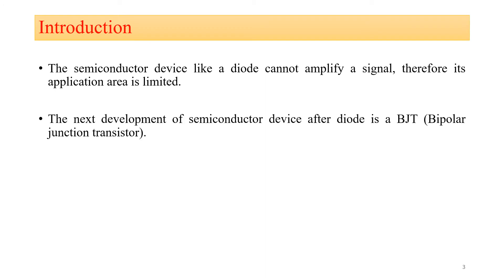So the next development of semiconductor device after the diode is the BJT, that is bipolar junction transistor. In the evolution of electronics, the PN junction diode was invented first, and after the diode the next type of semiconductor device invented was the bipolar junction transistor.